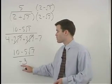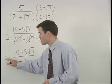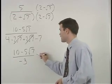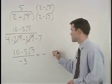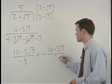As a last step, I would move the minus sign in the denominator of the fraction out in front to get minus 10 minus 5 root 7 over 3.